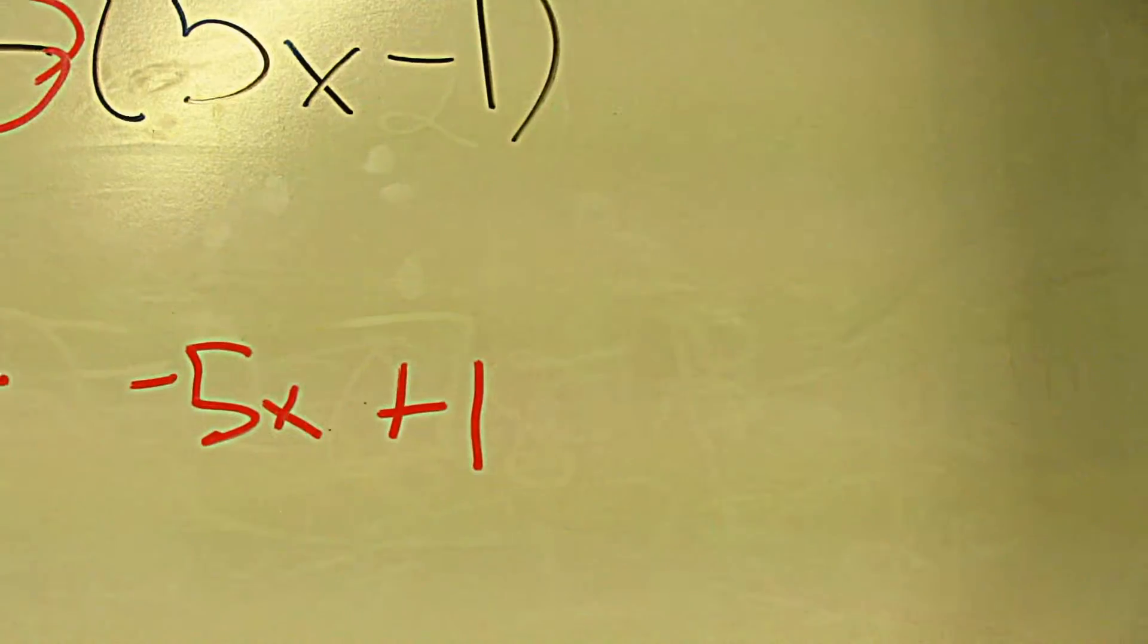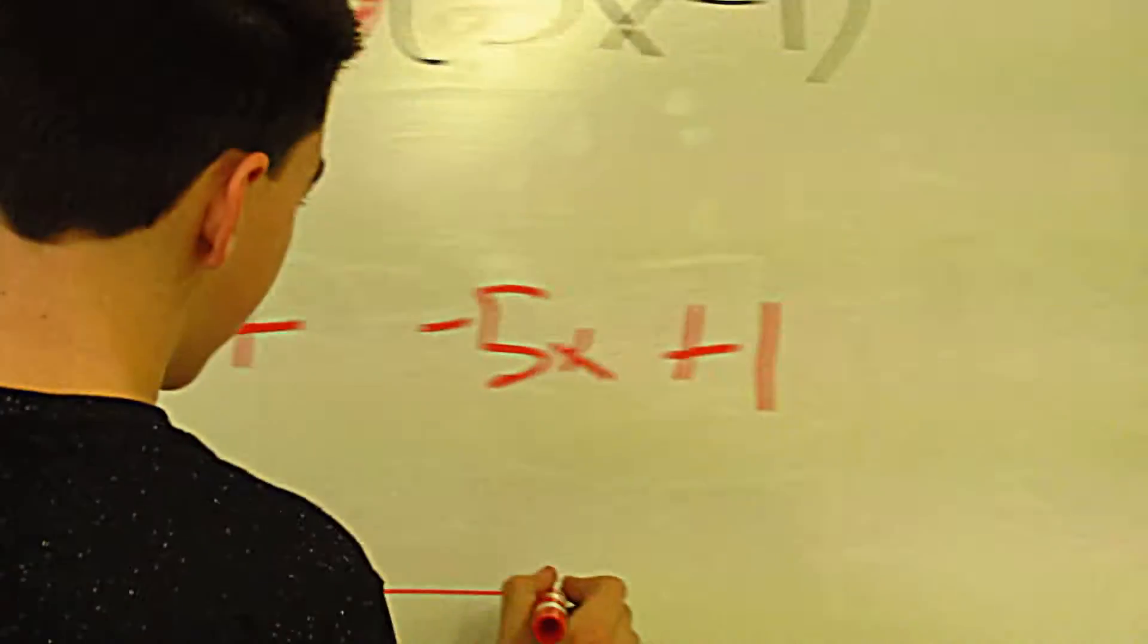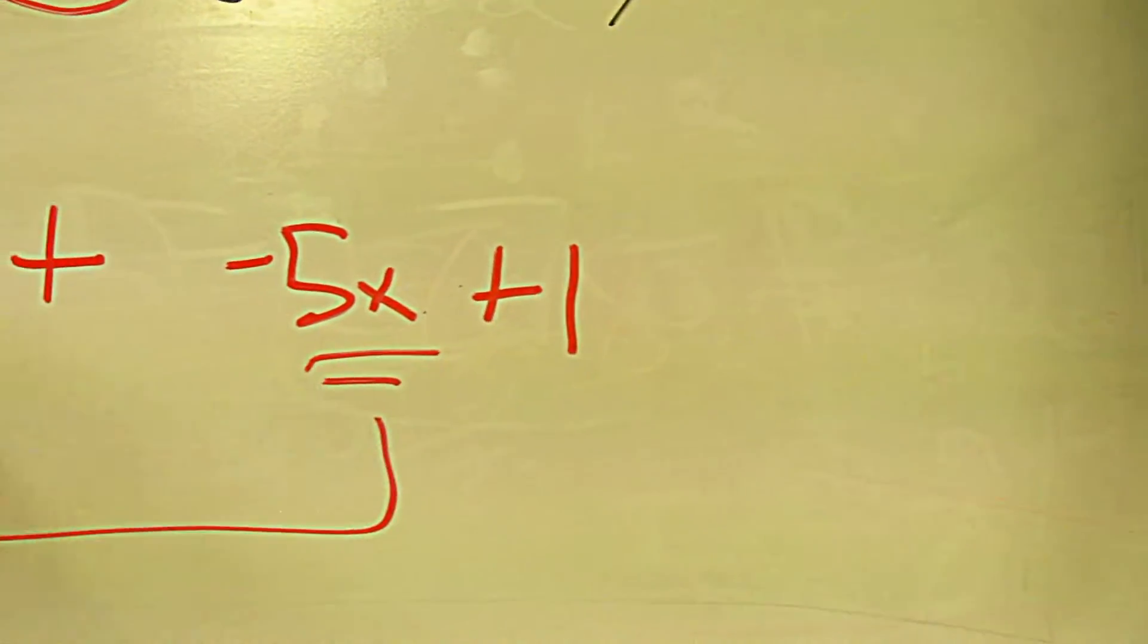So then over here it's going to be 6x, and over here is going to be 5x. Since this is negative and that's positive, it's going to be 1x or positive x.